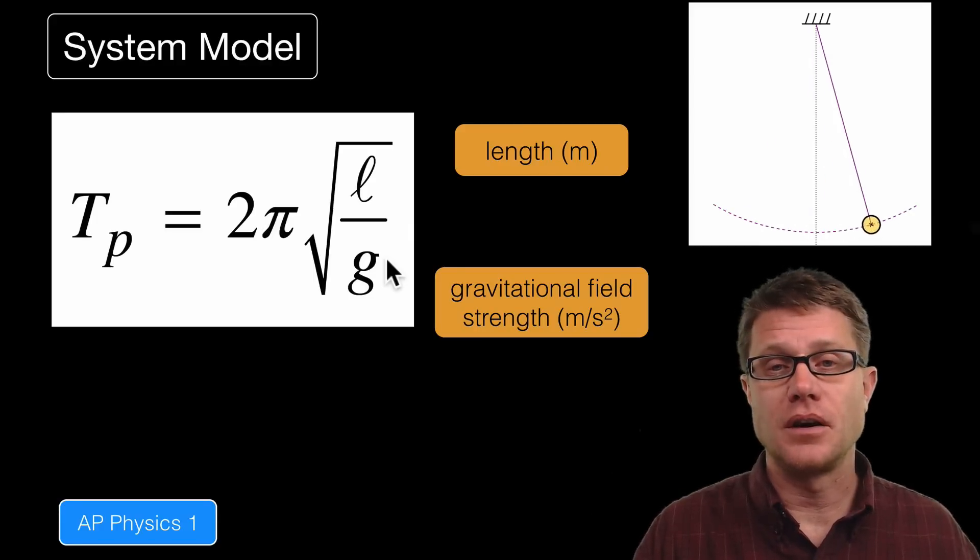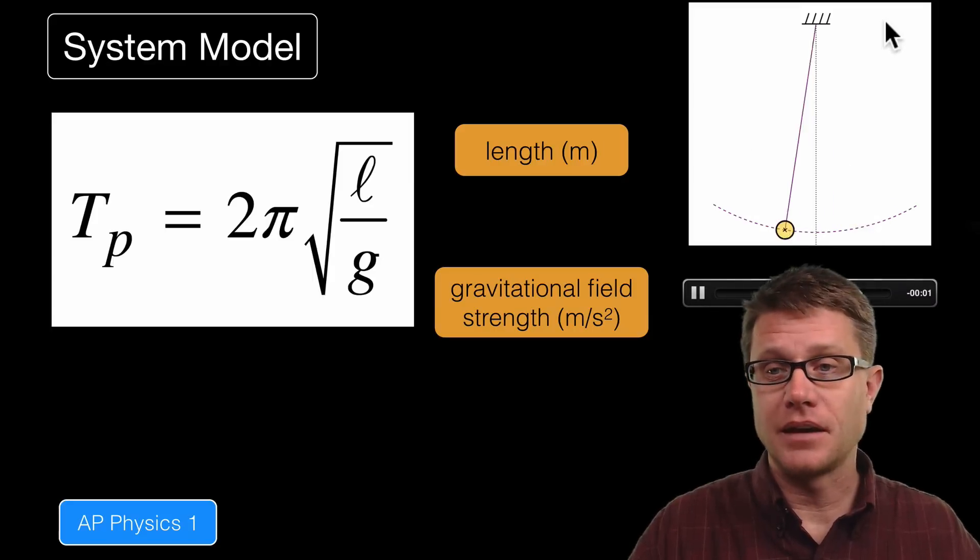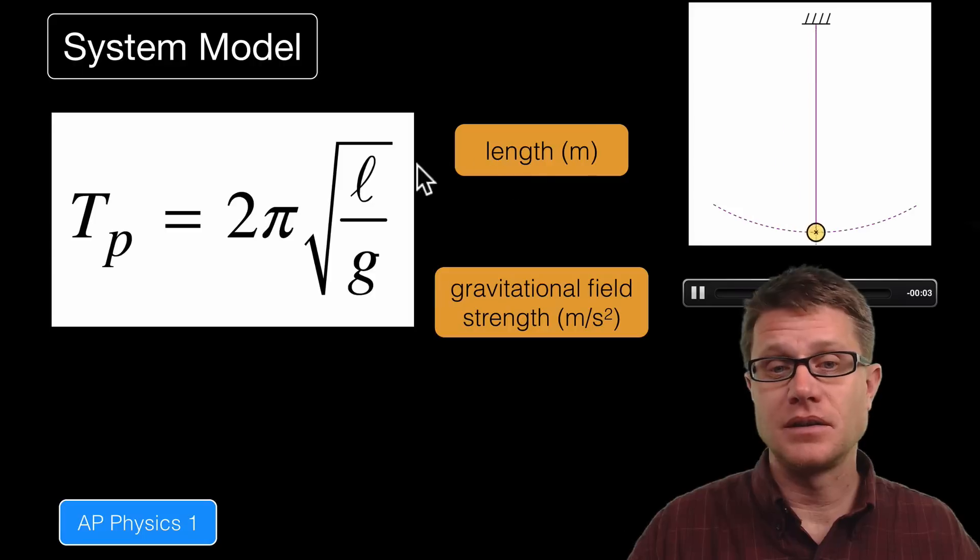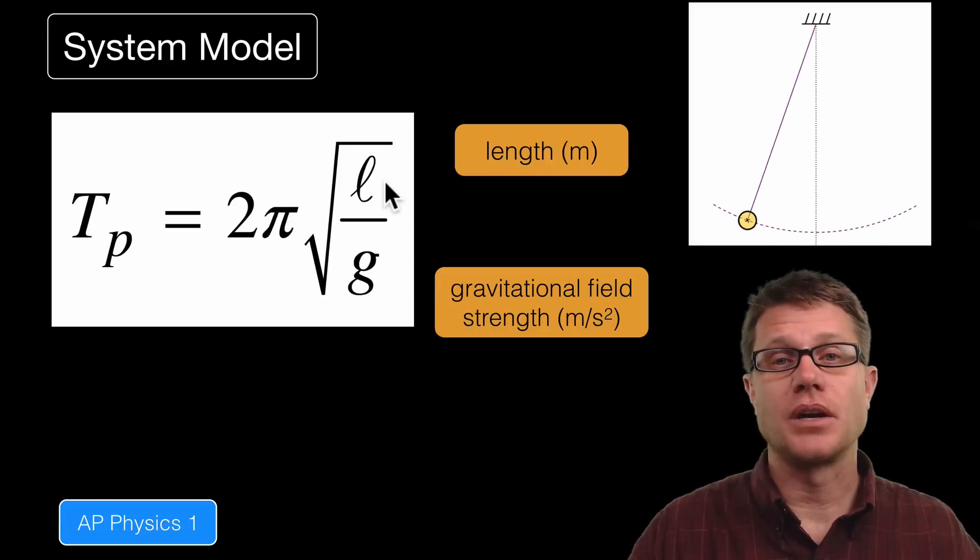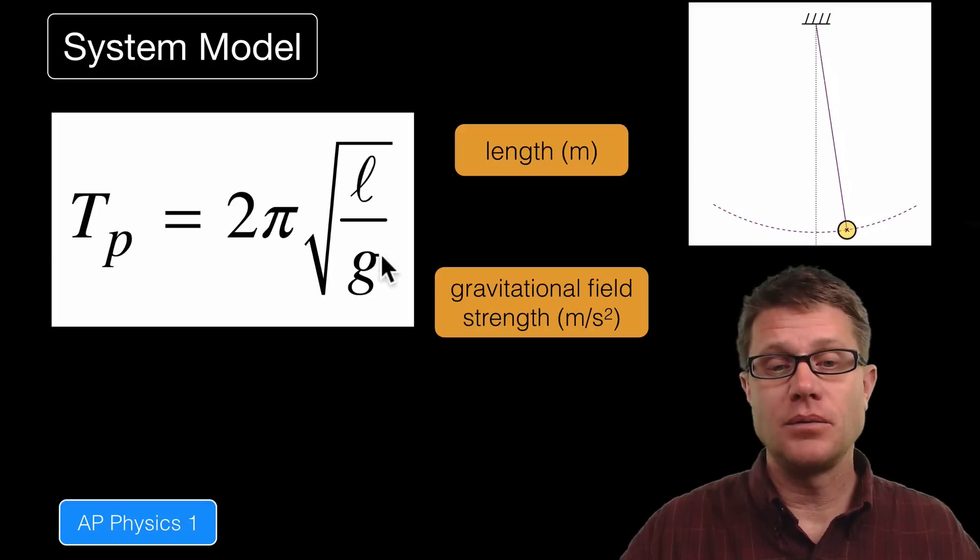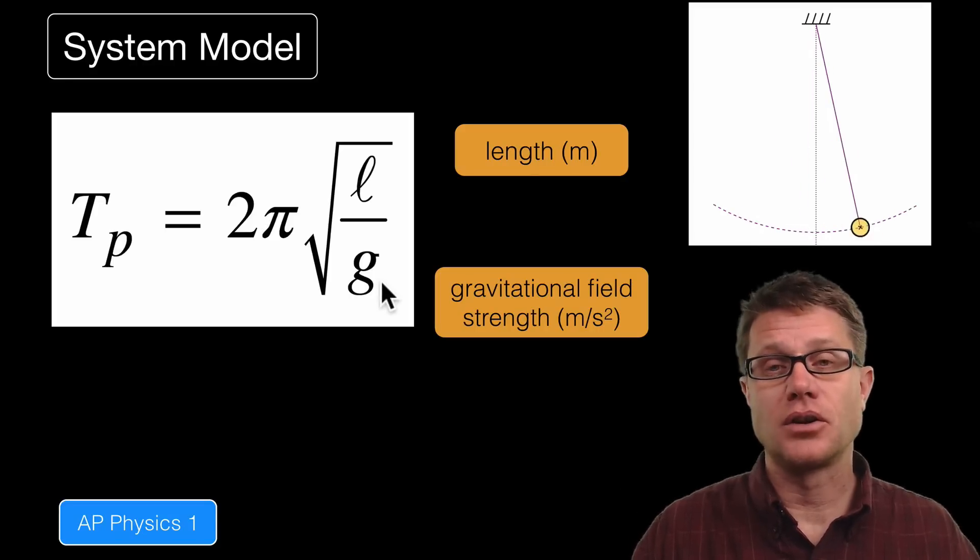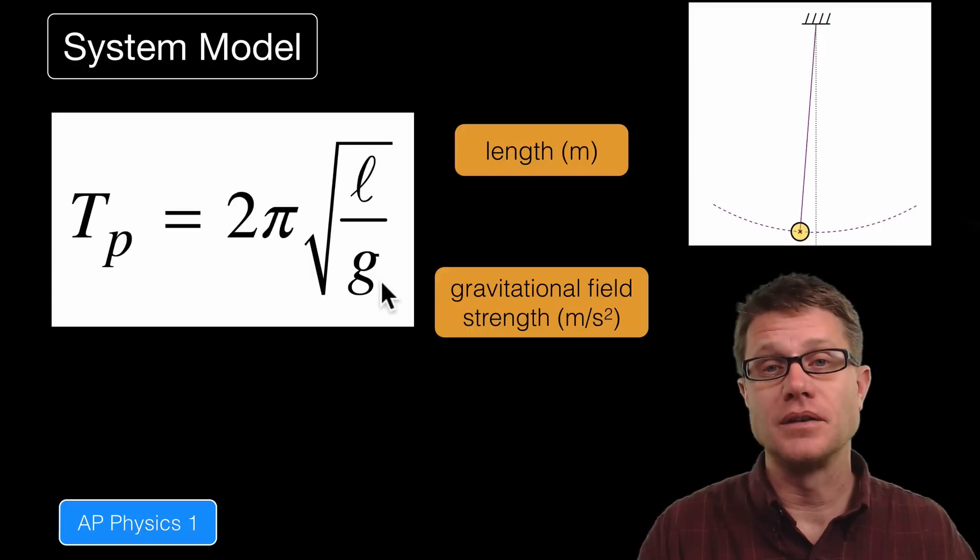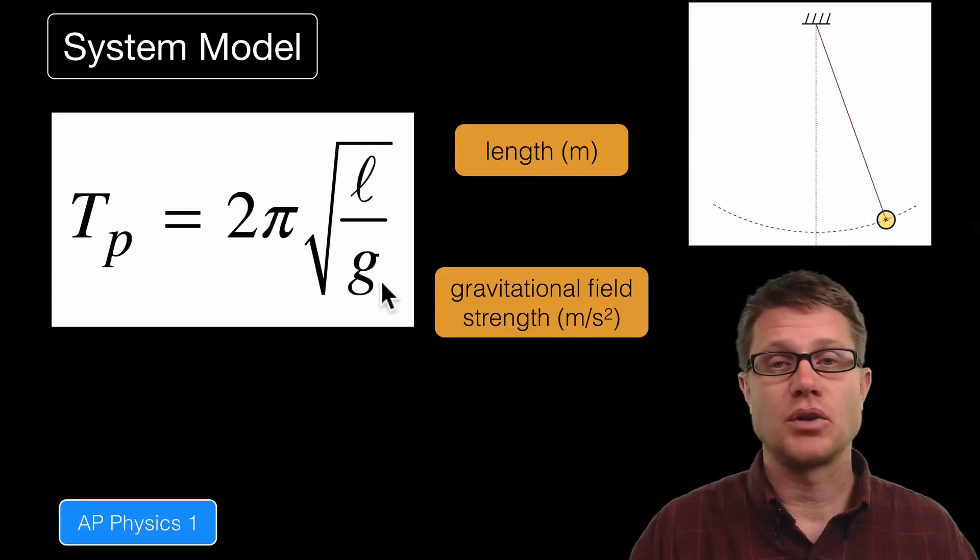As we talked about in an earlier video, what are going to be the things that affect the period of the pendulum? Well the length. So the length to the center of mass. The bigger that number is, since it is on the top of the equation, that means we are going to have a larger period. And then we also have the gravitational field strength. So the greater that gravitational field strength is, the more field strength there is, the shorter that pendulum is going to be.